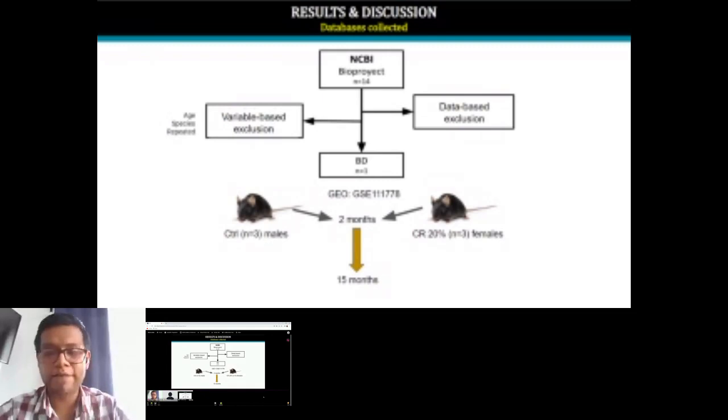We only recovered six samples from that database. We recovered three females and three males. The calorie restriction exposure started when the mice were two months old and continued until 15 months of age.